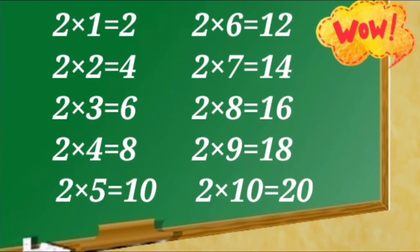2 ones are 2, 2 twos are 4, 2 threes are 6, 2 fours are 8, 2 fives are 10. 2 sixes are 12, 2 sevens are 14, 2 eights are 16, 2 nines are 18, 2 tens are 20.